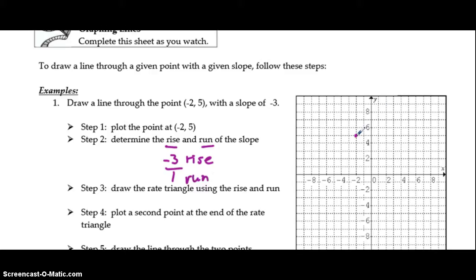From this point, we are going to draw the rate triangle using the rise and run. So what that means is we're going to go down 3 spaces for our rise. Since our rise is negative, we move down. And then we move one space to the right for our positive run. When you get to that end, step 4 tells us to plot a second point.